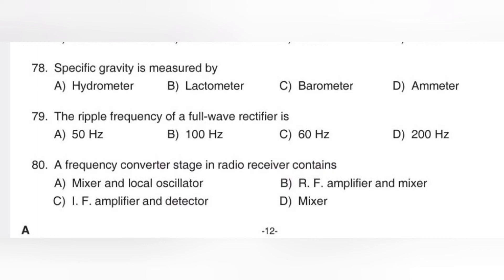The full wave rectifier efficiency is 81.2%. A bridge rectifier also has efficiency of 81.2%. If the input frequency is 50 Hz, the full wave rectifier ripple frequency is 100 Hz. Peak inverse voltage considerations also apply. The ripple frequency of a full wave rectifier is 2F.